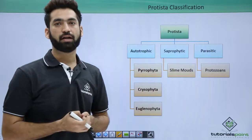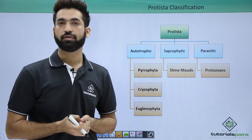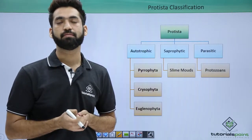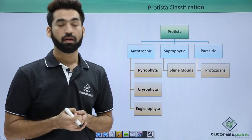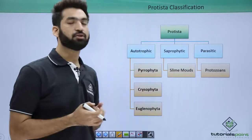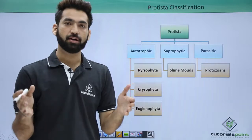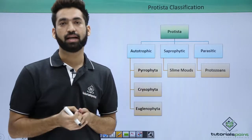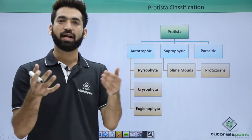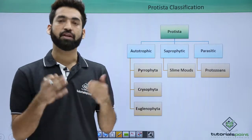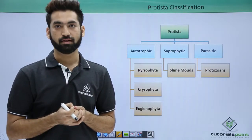When I was talking about Monera, I told you that Monera members represent the most nutritionally diverse kingdom. Now, among eukaryotes, animals have a heterotrophic mode of nutrition, Kingdom Plantae members are all autotrophic, and Kingdom Fungi members are all heterotrophic again.